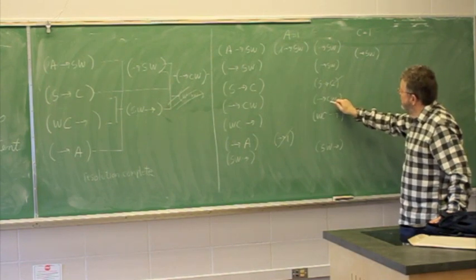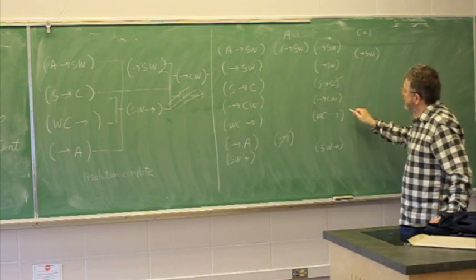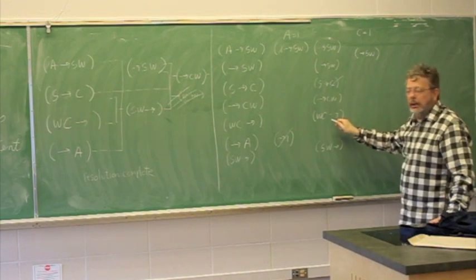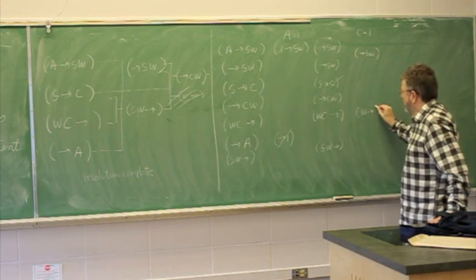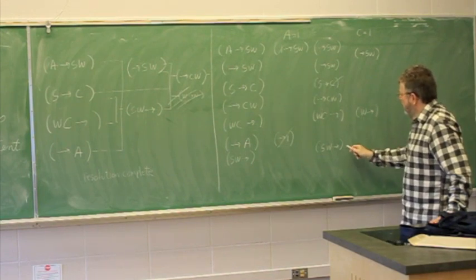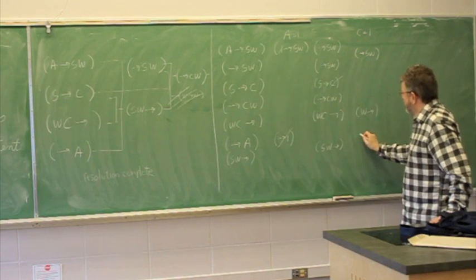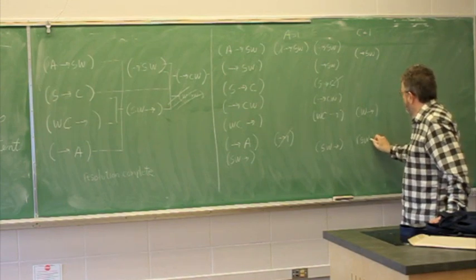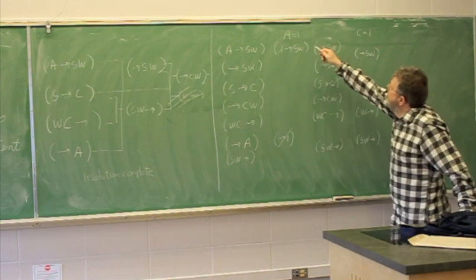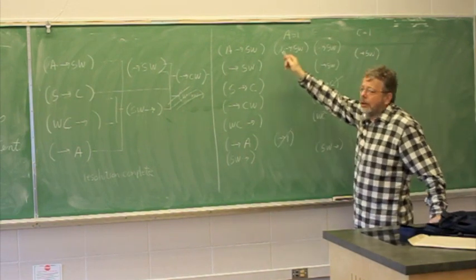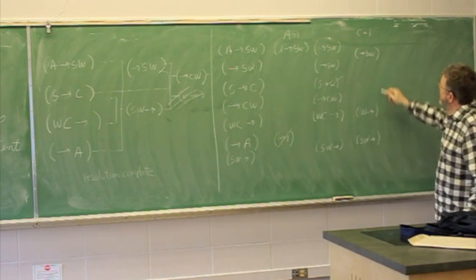Making C equals 1 allows us to get rid of this one. So we don't have it anymore. Making C equals 1 allows us to get rid of this one. Making C equals 1 allows us to remove C from this side. So this becomes W arrow. And this one is not changed at all.